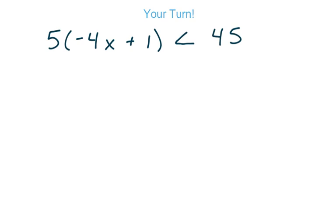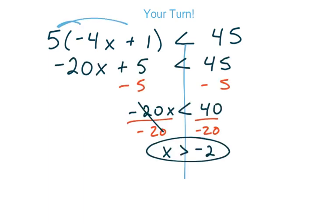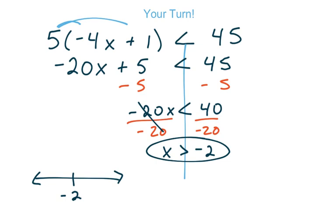Now it's your turn. Write the inequality, try it by yourself, then press play. You should end up with x is greater than negative 2, and hopefully you remembered to flip the inequality sign because you divided by negative 20. To check, plug in 0 — that gives 0 plus 1, times 5 equals 5, and 5 is less than 45. For the graph, use an open circle on negative 2 and shade to the right, since we're looking for numbers greater than negative 2.